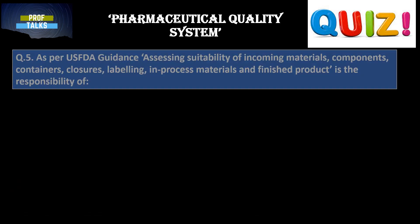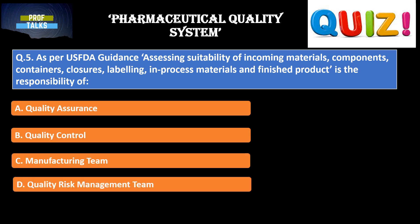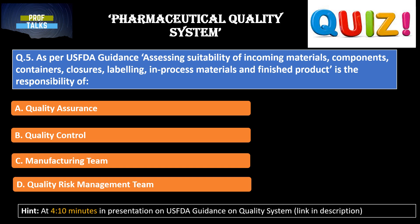We move ahead with the fifth question: as per USFDA guidance, assessing suitability of incoming materials, components, containers, closures, labeling, in-process material, and finished product is the responsibility of — options are: quality assurance; quality assurance and quality control; manufacturing team; and quality risk team. If you know the answer you can type it into the comment box, else you can go to 4.10 minutes of the USFDA guidance presentation to find and revise the aspect.